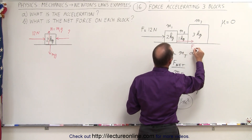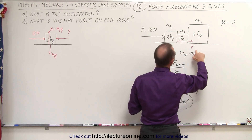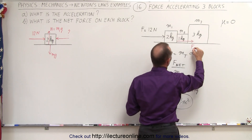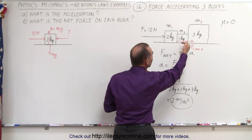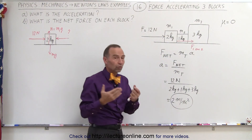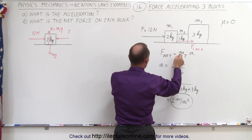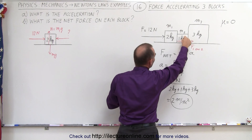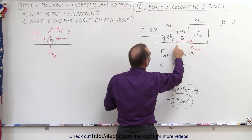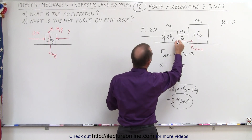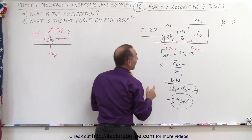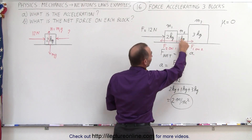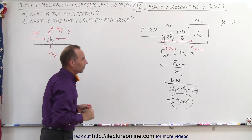We call that force F from block 1 on block 2. Whatever that force is, there's going to be an equal and opposite force in the opposite direction because of Newton's third law — for every action, there's an equal and opposite reaction. So the force on block 2 caused by block 1 is going to be the same magnitude as the force pushing back, which is the force from block 2 on block 1. These are equal and opposite.